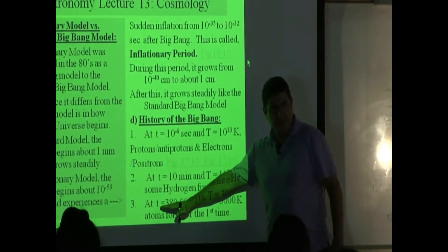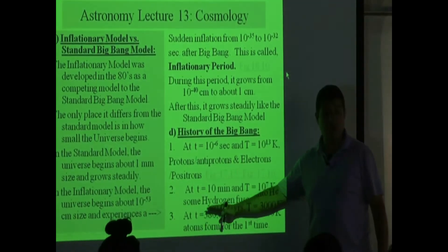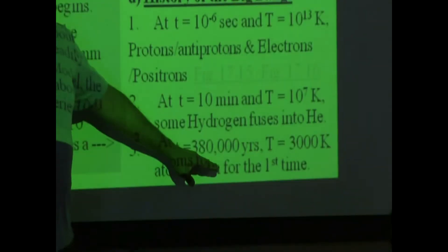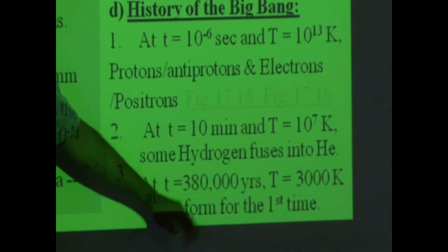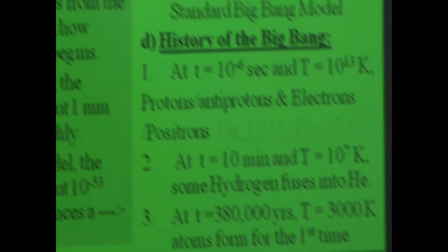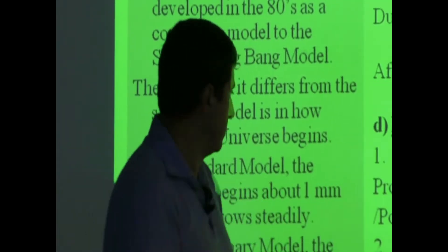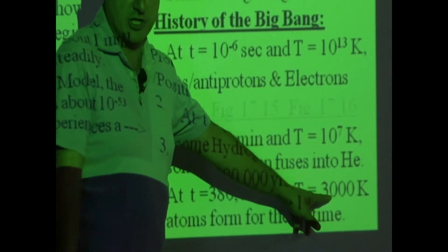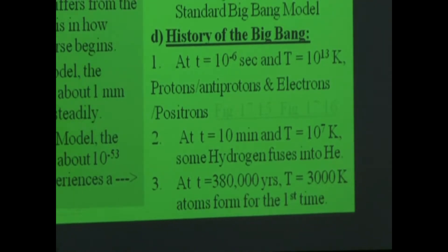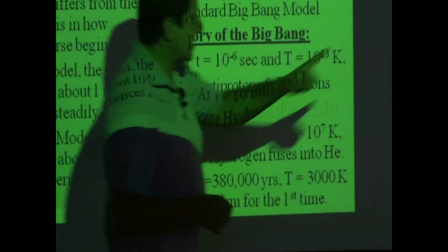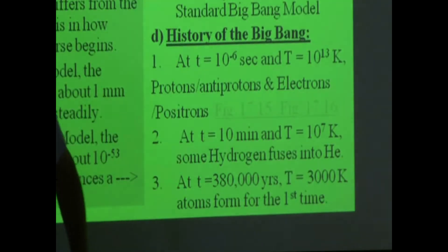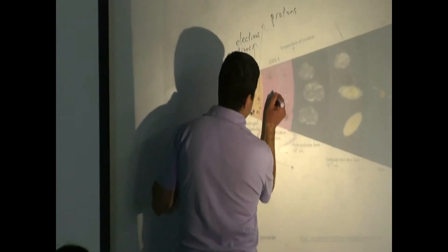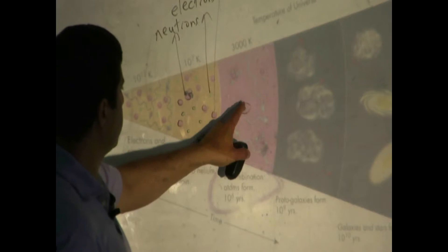About 380,000 years after the Big Bang — they've refined this number from the older estimate of a million years — the next major event took place. The universe is now down to 3,000 Kelvin, very cold comparatively to what it started with. The first generation of atoms formed. In the picture, you can see a red proton and a blue electron going around it.